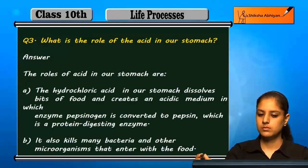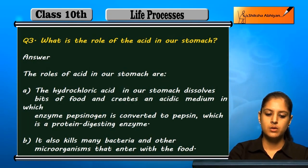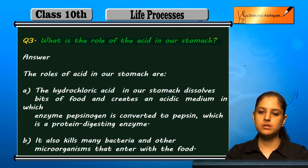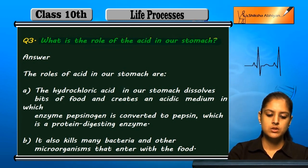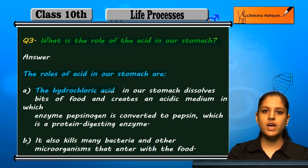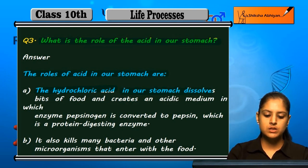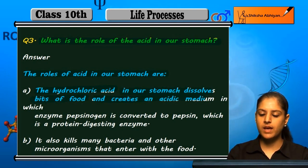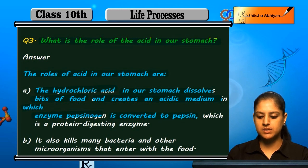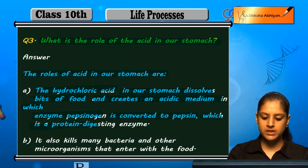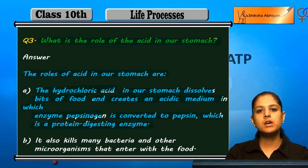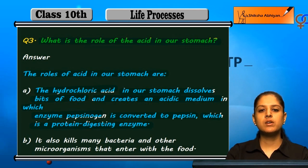Question number three: what is the role of acid in our stomach? The hydrochloric acid present in our stomach dissolves the bits of food and creates an acidic medium in which the enzyme pepsinogen is converted to pepsin, which is a protein-digesting enzyme.